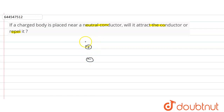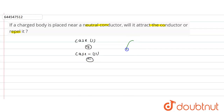Let's consider two cases. Case one: a positive charge body, and case two: a negative charge body. In both cases, a neutral conductor is placed nearby. In the conductor, positive and negative charges are present due to protons and electrons.